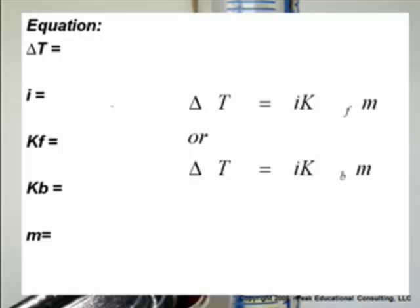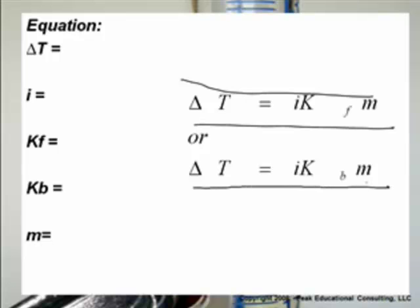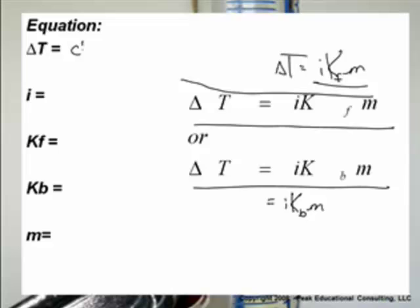Now there are some equations. Not only are we interested in the fact that it's lower — we wonder how much. We love math — quantitative. So here's your equation: delta T equals i times K_F times m. Or, delta T equals i times K_B times m. Delta T means the change in the property — specifically the change in temperature of the boiling point or freezing point. It's not the actual temperature, it's the change in temperature.